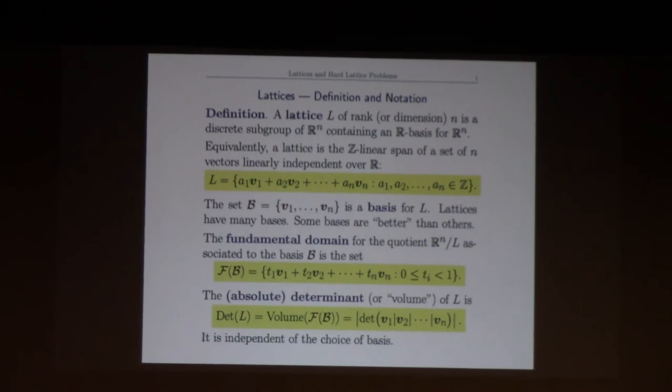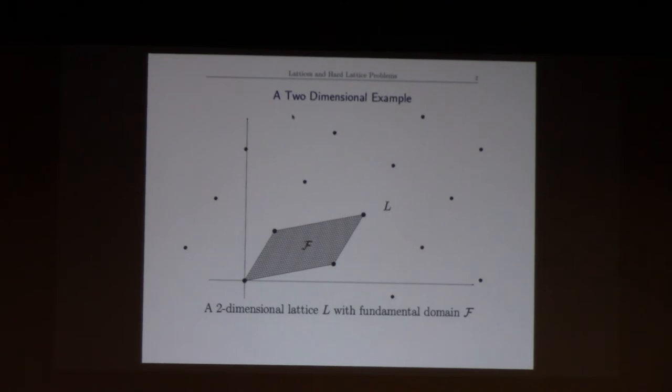The determinant of L will be the volume of one of these fundamental domains. If you take the basis vectors and put them in as column vectors in a matrix, you just take the determinant. There's a sign—you might get a minus sign—so take the absolute value, and that gives you the volume of the fundamental domain. This clicker doesn't actually work with my computer, but I'm holding it so I can point at things.